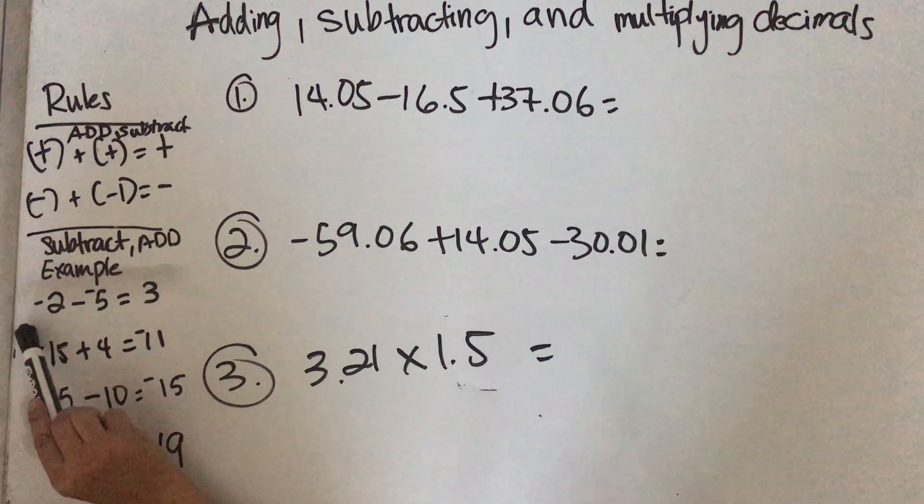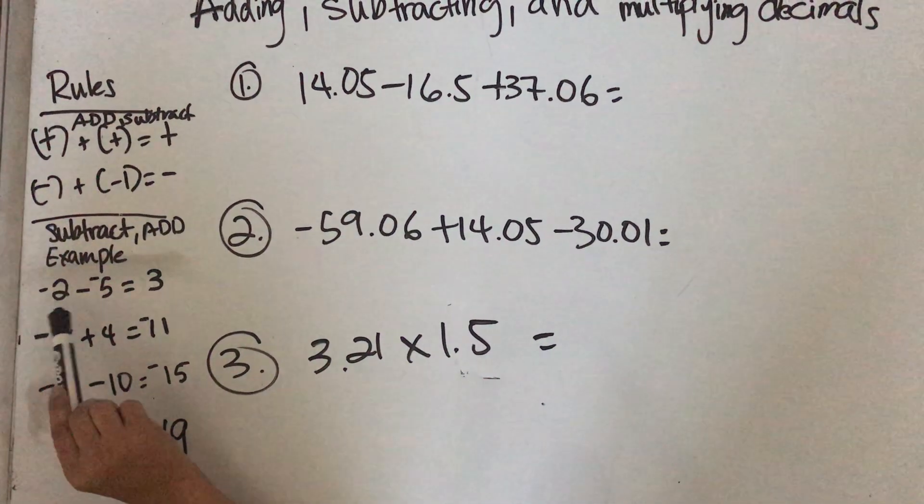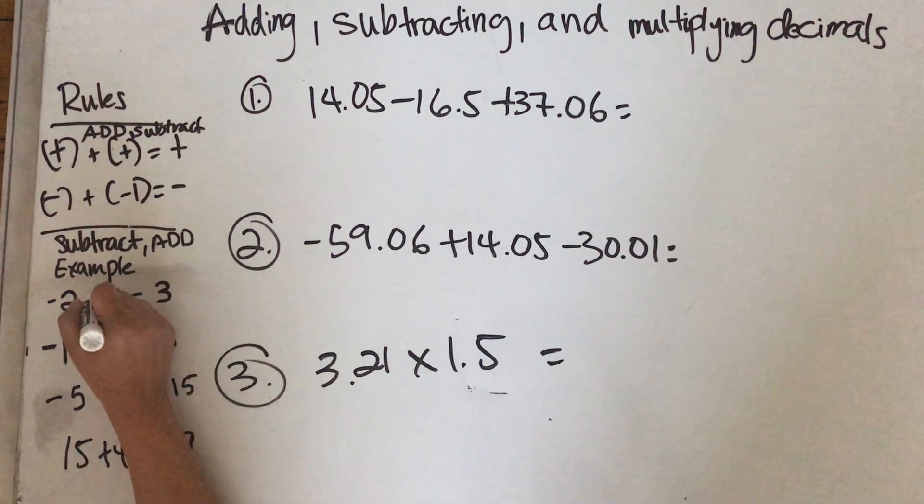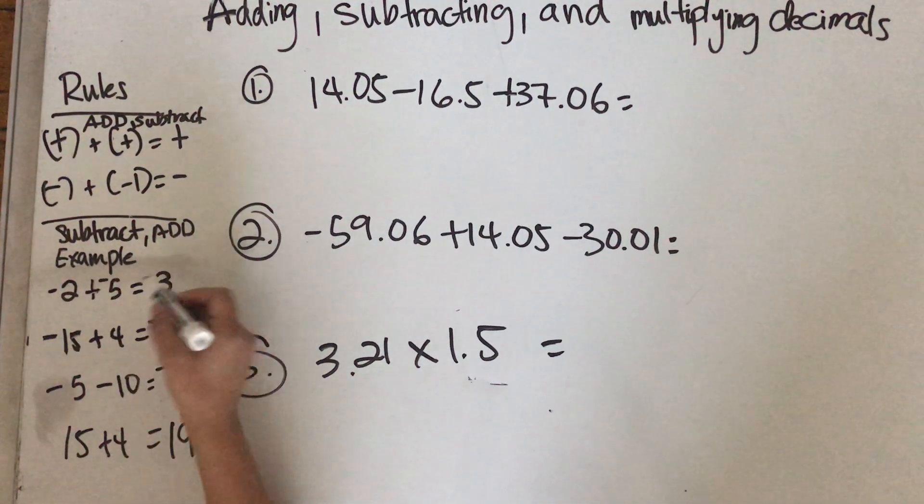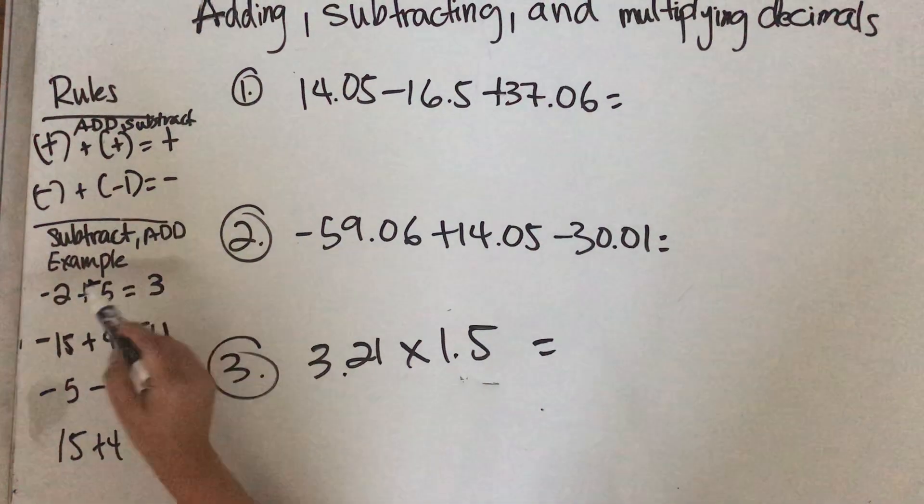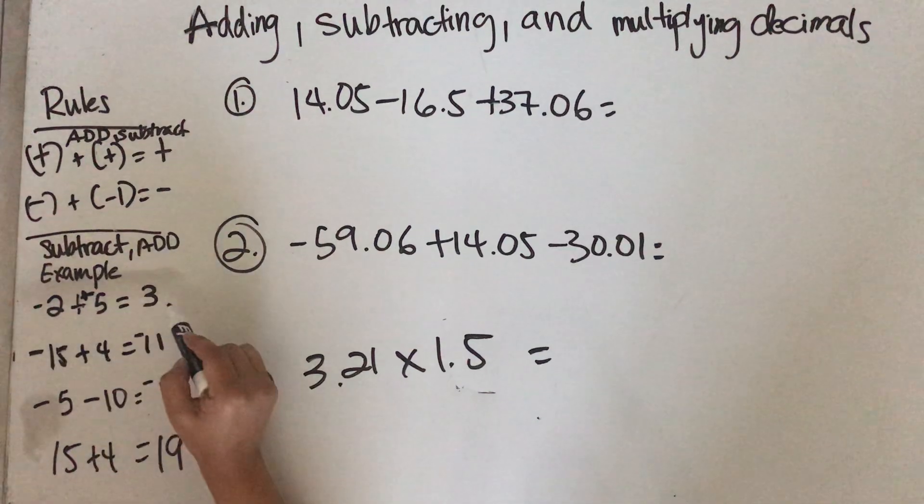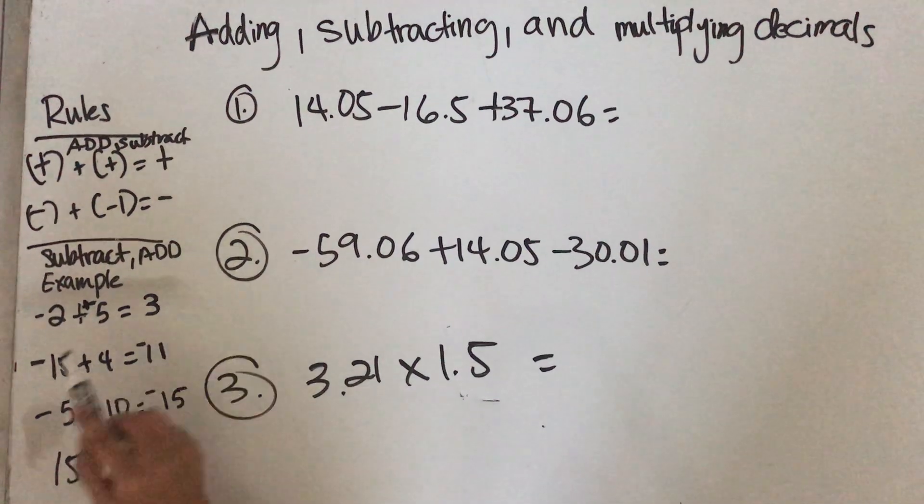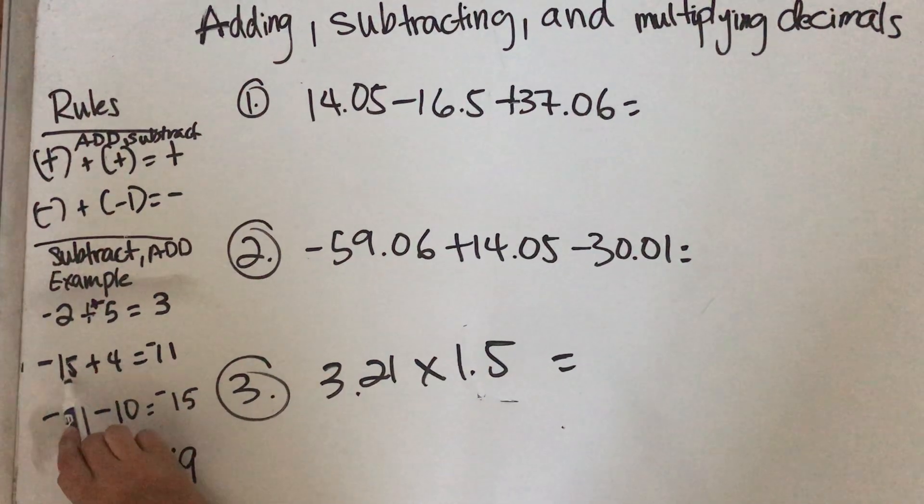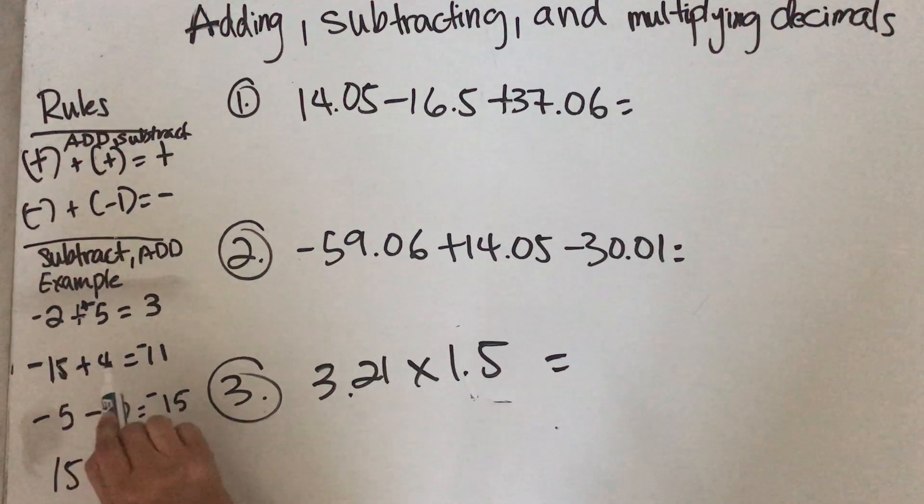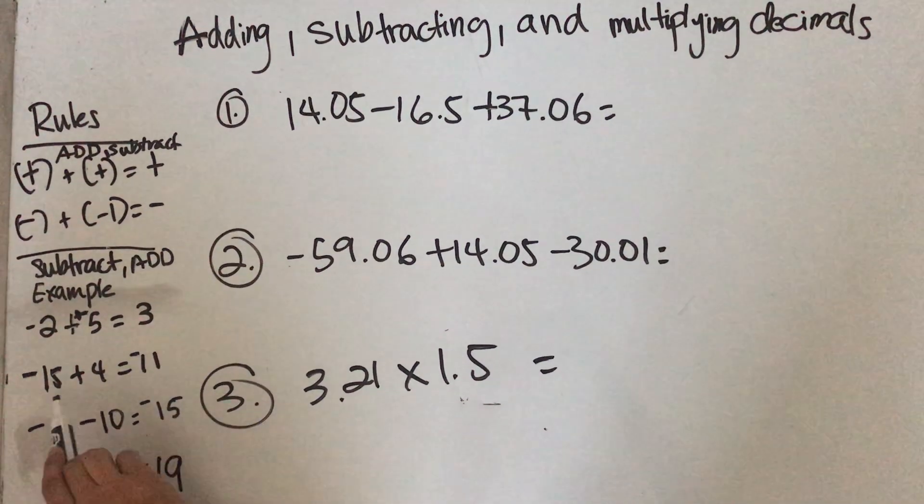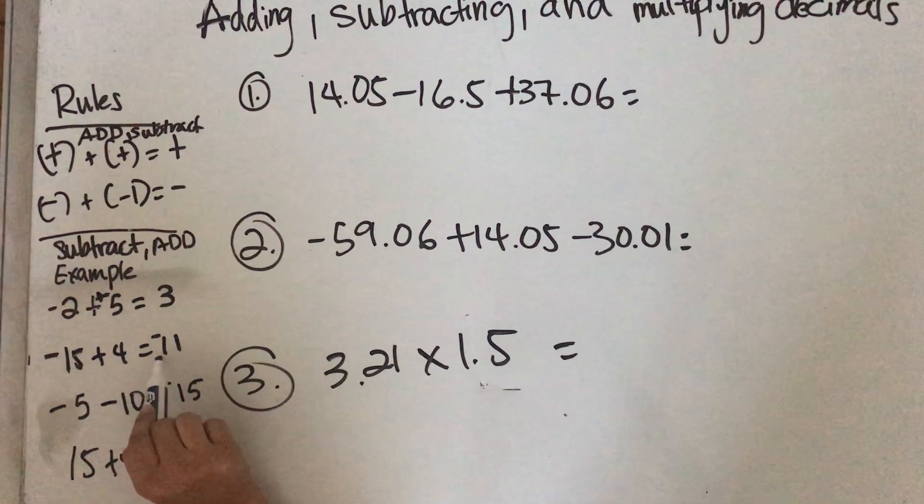For example, if you have negative 2 minus negative 5, this actually becomes a positive, so 5 minus 2 is 3. Now if you have a negative sign on the highest number, like negative 15 plus positive 4, your answer is negative 11.